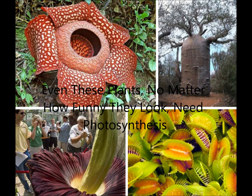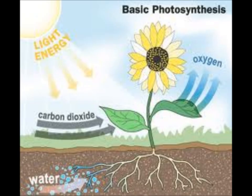Inside chloroplasts, membrane stacks called thylakoids are stacked in interconnected piles called grana. Within these stacks, photosynthesis takes place. The process of photosynthesis is just a series of reactions.